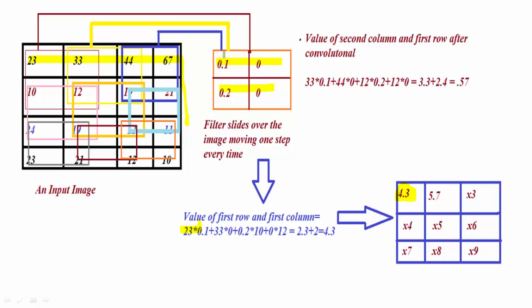In the same way, you can go for the other positions. This input matrix, which is 4 by 4, when multiplied by a 2 by 2 filter, provides a 3 by 3 matrix feature map as a result. This is how the convolution takes place when we are working with deep learning, CNN, and the convolutional layer.